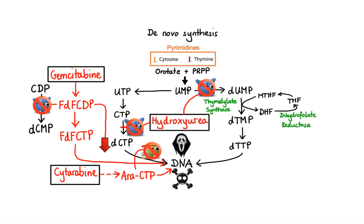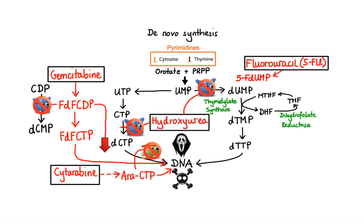Finally, let's move on to discussing anti-metabolites that interfere with the last critical step of pyrimidine synthesis, that is conversion of dUMP to dTMP. The first drug is an agent called fluorouracil, often abbreviated as 5-FU. Just like the other anti-metabolites, fluorouracil requires a few enzymatic conversions to form its active metabolites: 5-fluorodeoxyuridine monophosphate (5-FdUMP) and 5-fluorouridine triphosphate (5-FUTP). 5-FdUMP acts as an inhibitor of thymidylate synthase, the enzyme that methylates dUMP to form dTMP. The second metabolite, 5-FUTP, mimics uridine triphosphate and is recognized as a substrate and incorporated into RNA by RNA polymerase, leading to inhibition of RNA synthesis and function.